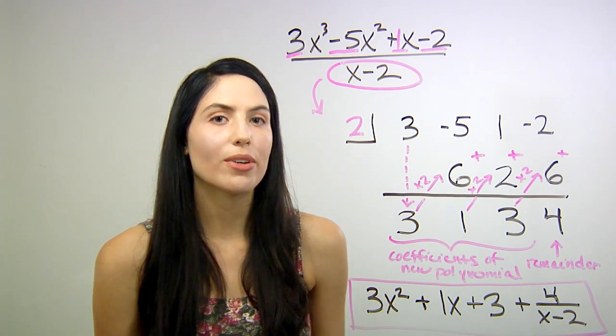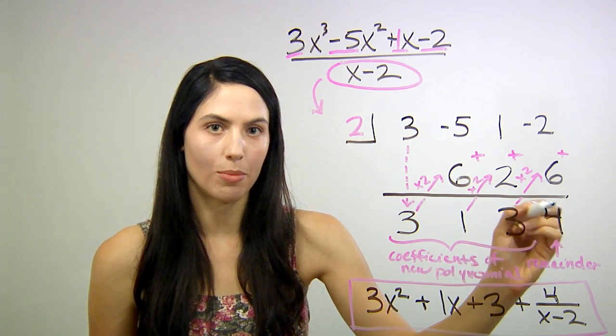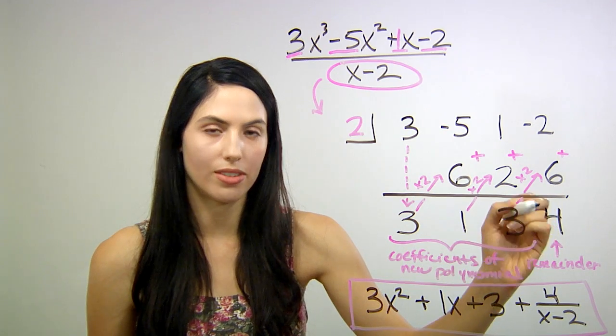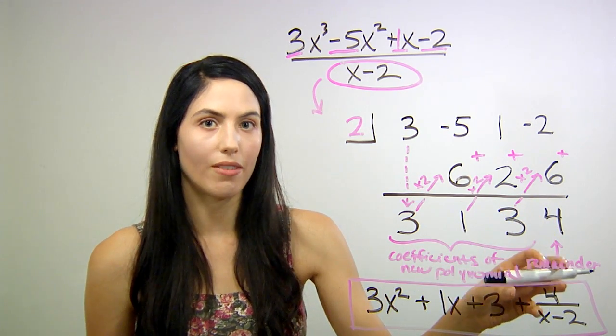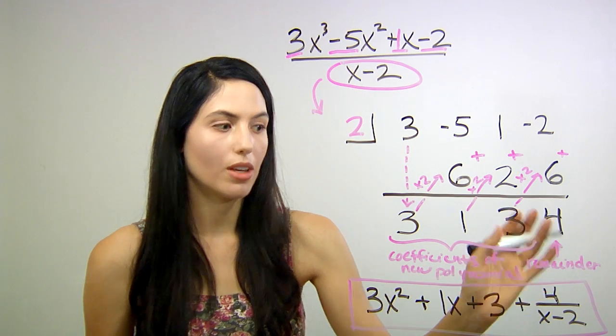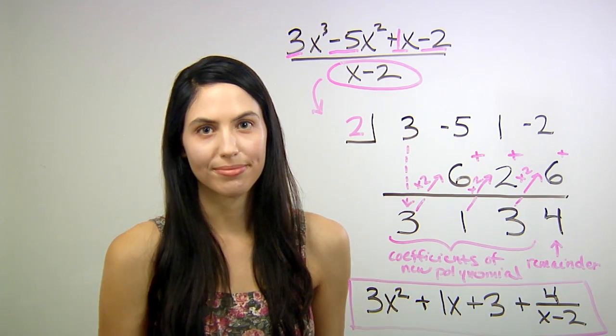Another thing to remember is that sometimes you don't have a remainder. Sometimes you'll get zero as your last number in the final column of your synthetic division. And that's fine. That just means that you won't have a fraction as your last term. That won't even be there, and you'll just have a polynomial.